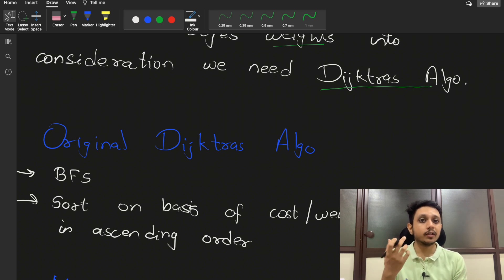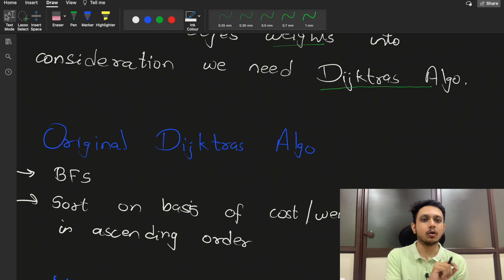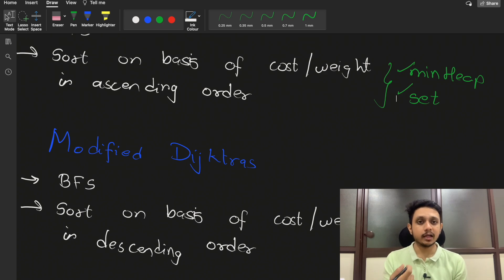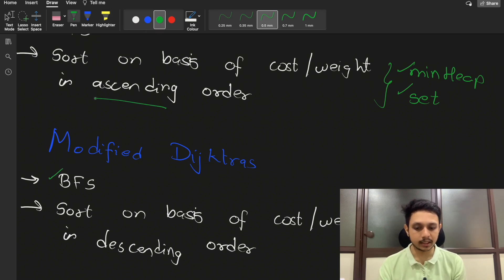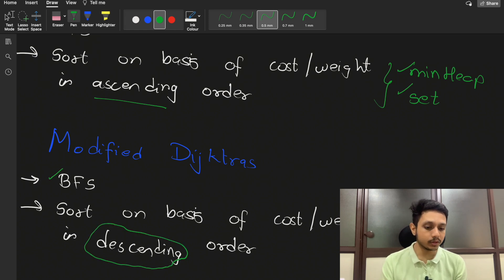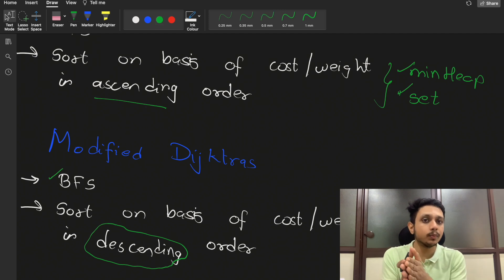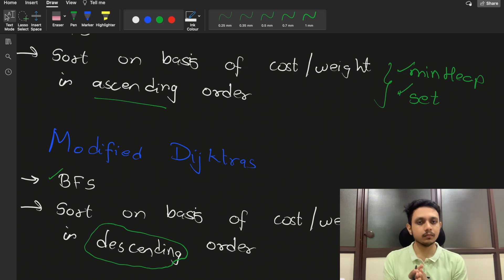In this question we are asked to find the path with maximum probability. If you treat probability as a cost, then we have to sort in descending order, not ascending, because we want the maximum probability path. So we modify Dijkstra's algorithm such that we get the path with maximum probability — the BFS remains the same, but instead of sorting in ascending order we sort in descending order. That's why we would use a max heap instead of a min heap or set.